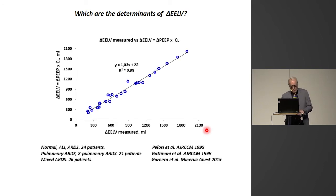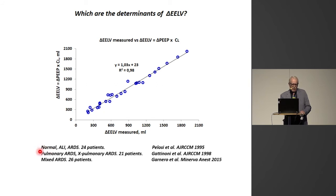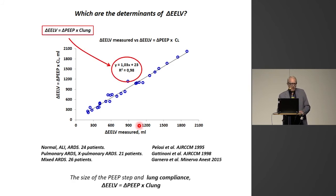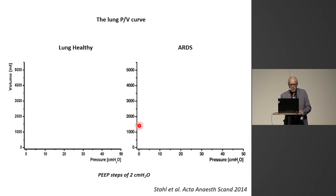We looked into a previously published paper that had all the data necessary to calculate. On the x-axis is the delta EELV measured, and on the y-axis is the volume calculated as delta PEEP times the lung compliance. This was in patients with normal lungs, ALI, ARDS, and the two extremes of the ARDS syndrome — pulmonary and extra-pulmonary — in a study where PEEP steps went from 5 to 40 centimeters. In all these cases, the end-expiratory lung volume change was correlated to the measured delta EELV by the identity line.